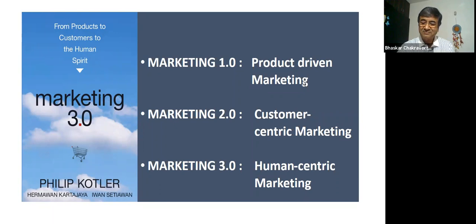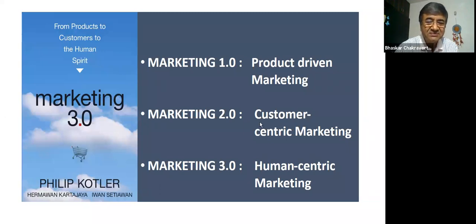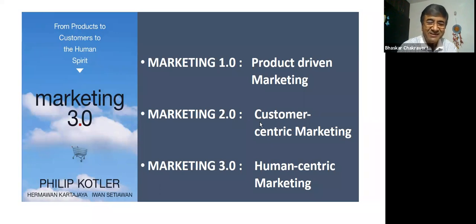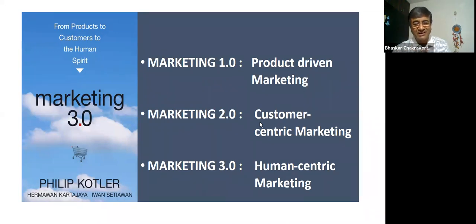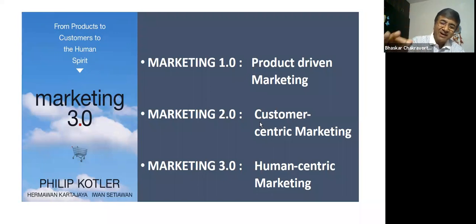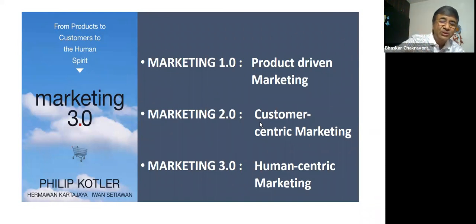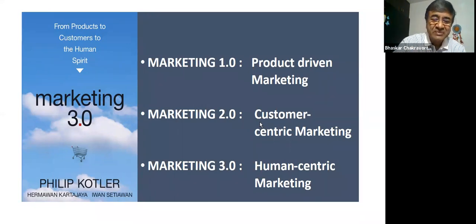Who is the author of the four P's — the marketing mix: product, price, promotion, and place? The answer is Jerome McCarthy. All those who answered correctly will get a prize. The four P's and STP — segmentation based on demographics, psychographics, behavior, attitude — targeting and positioning, share of mind, perception — all of that was good in Marketing 2.0.